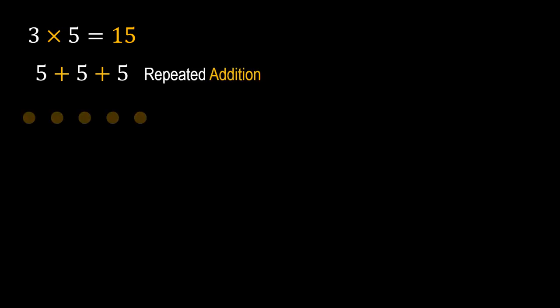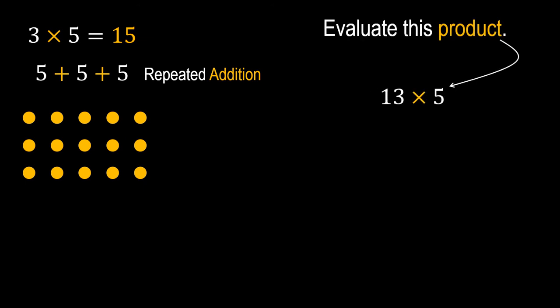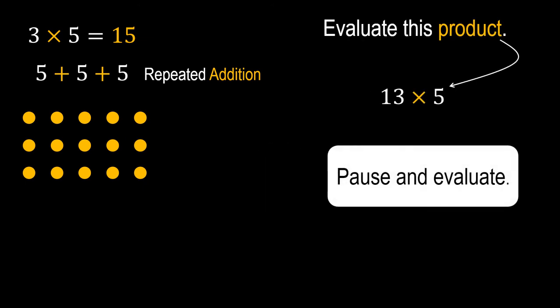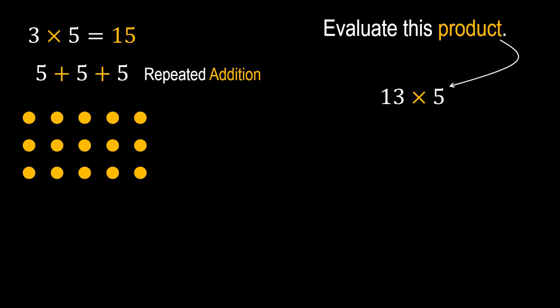So if we draw 5 columns of dots with 3 dots each, then the total number of dots here is what 3 times 5. Next, let's see what happens when you multiply a two-digit number. So instead of multiplying 3 and 5, try evaluating 13 times 5.